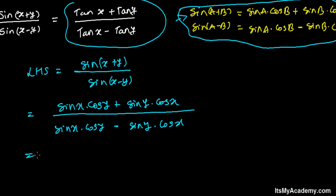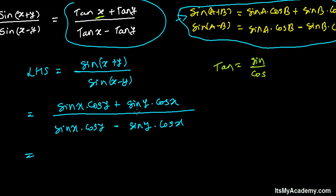Now what to do? We need to get tan(x) and tan(y) from this expression. We know that tan is the ratio of sine over cosine. We have sine(x) but we don't have cos(x) dividing. Similarly we have sine(y) but not cos(y). So what if we divide both numerator and denominator by cos(x)cos(y) to get the form tan(x)+tan(y) over tan(x)−tan(y)?